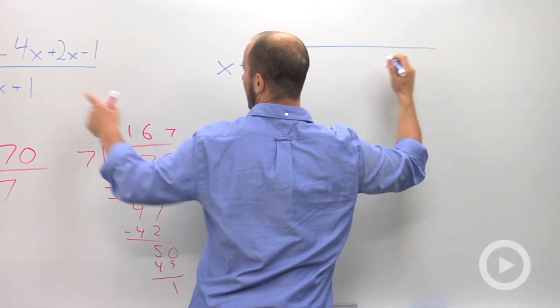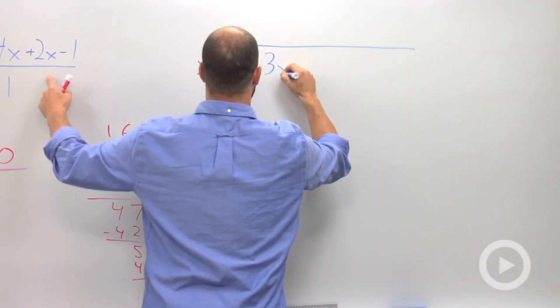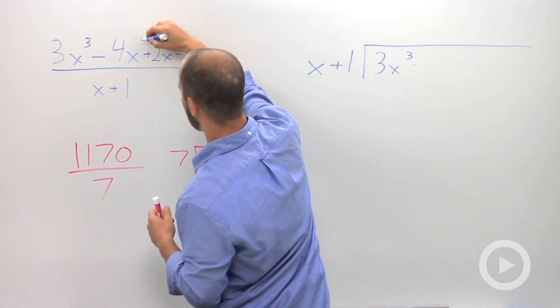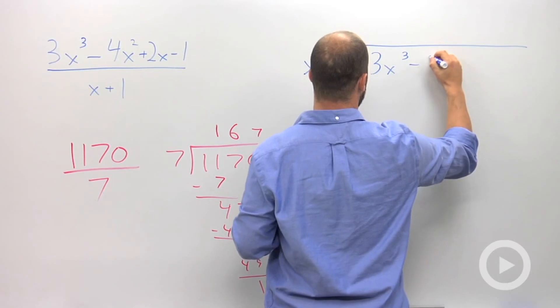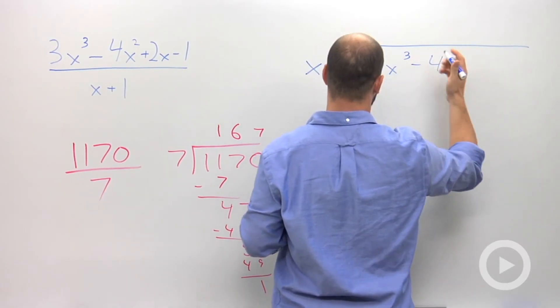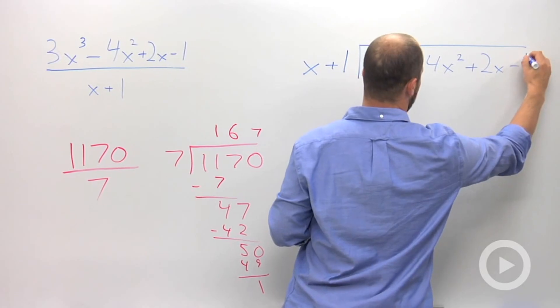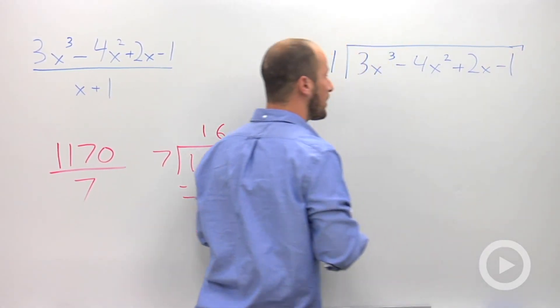I have a big bracket, 3x cubed, and I think I forgot a square in my problem. Let's throw that in there. 3x squared minus, sorry, 3x cubed minus 4x squared plus 2x minus 1. Okay.